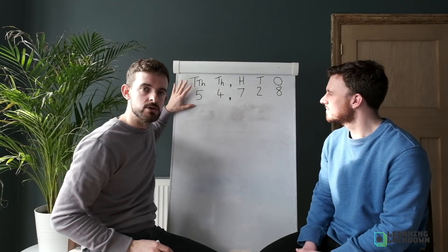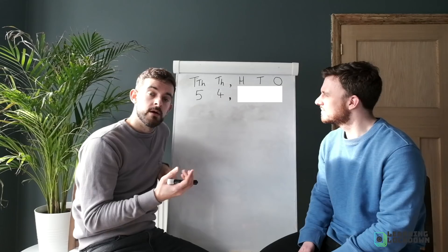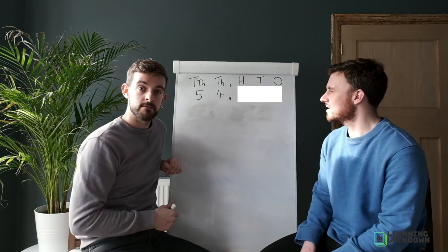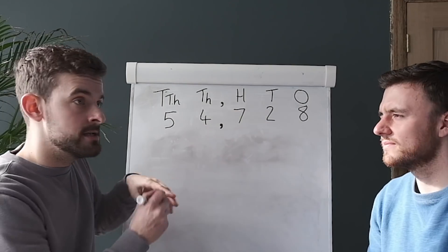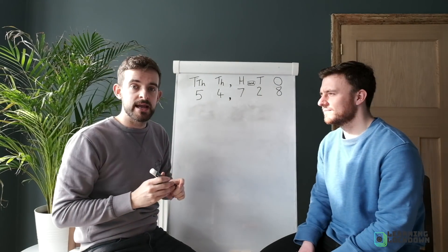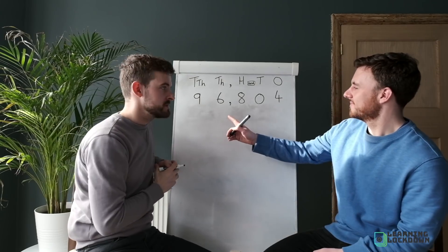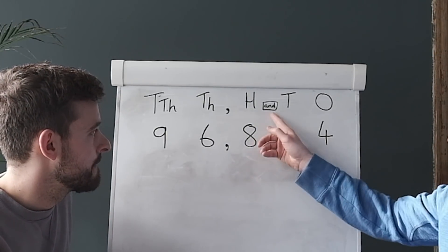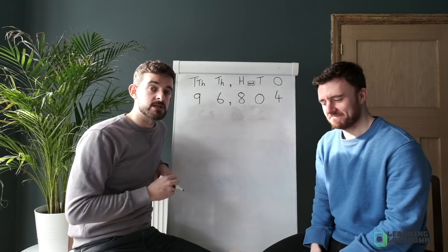54 — but because those digits are in the thousands family, we say fifty-four thousand. Then we carry on: seven hundred and twenty-eight. So the full number is fifty-four thousand, seven hundred and twenty-eight. Let's try another five digits. Put the comma in, separate the thousands: 96 — so ninety-six thousand. Eight hundred, nothing in the tens, straight to the four: ninety-six thousand, eight hundred and four.